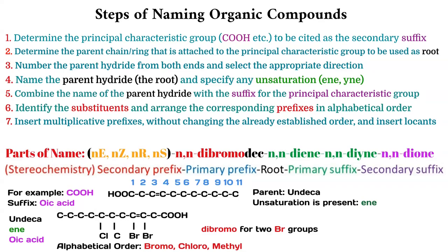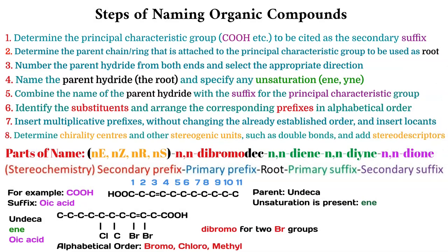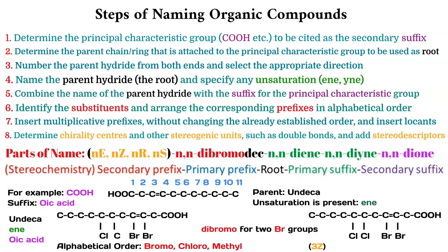At the end, determine the chirality centers and other stereogenic units such as double bonds, and add stereo descriptors. For example, both the bromines are on the same side of the double bond in the given structure — that's why you use Z or cis. Also the number 3 means the double bond is at carbon number 3. At the end, combine all the parts of the name so that you get the complete IUPAC name of the compound.